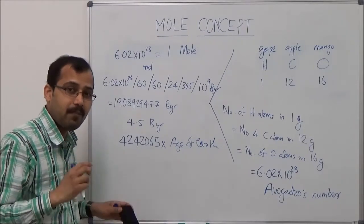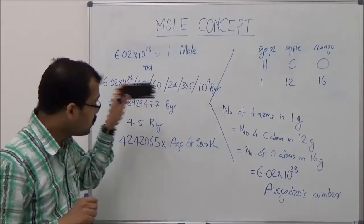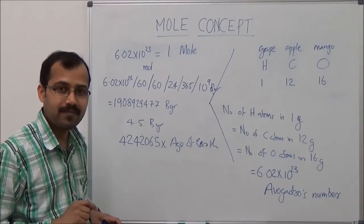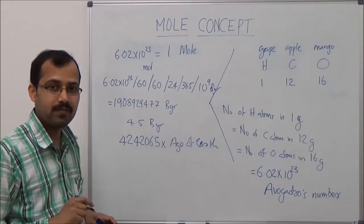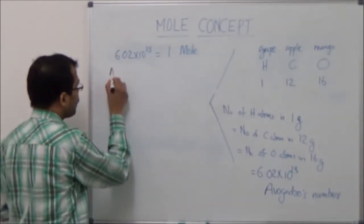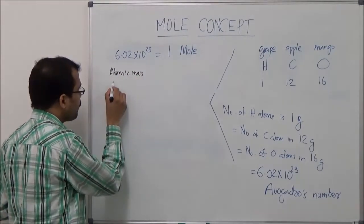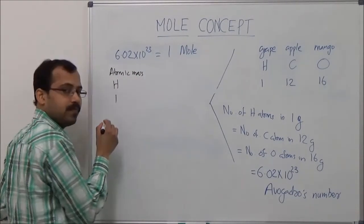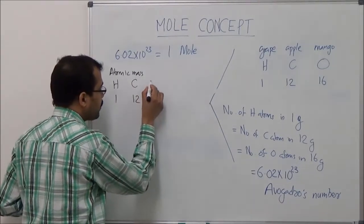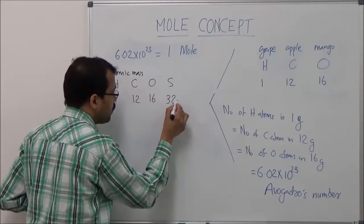So now you can imagine what a big number this mole is — it's a very big number. This many atoms are present in 1 gram of hydrogen, and this many atoms are present in 12 grams of carbon — there is one mole. From the periodic table we can see the atomic mass of various atoms: the atomic mass of hydrogen is 1, carbon is 12, oxygen is 16, and sulfur is 32, and so on.